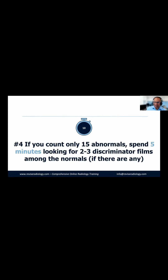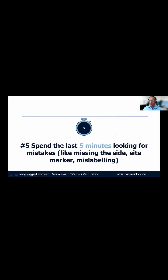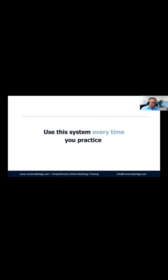If you've only counted 15 abnormals, spend time looking through the 15 normals to see if two or three could be abnormal — but be very careful not to over-call. Spend the last five minutes checking for mistakes like missing the side marker or mislabeling. If it's a right side and you've written left, correct it, because wrong side labeling in your text will cost you marks. Start using the system every time you practice.